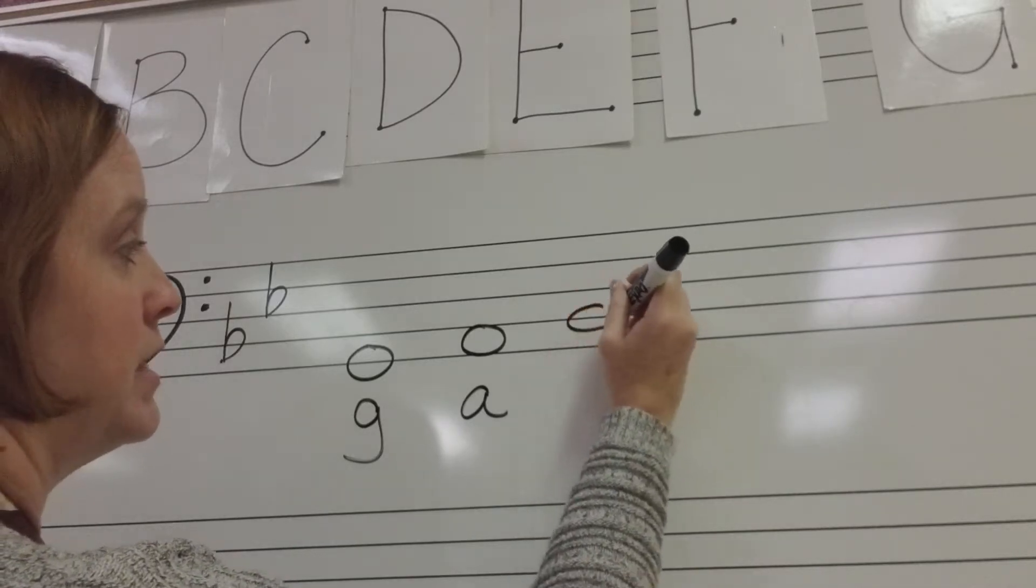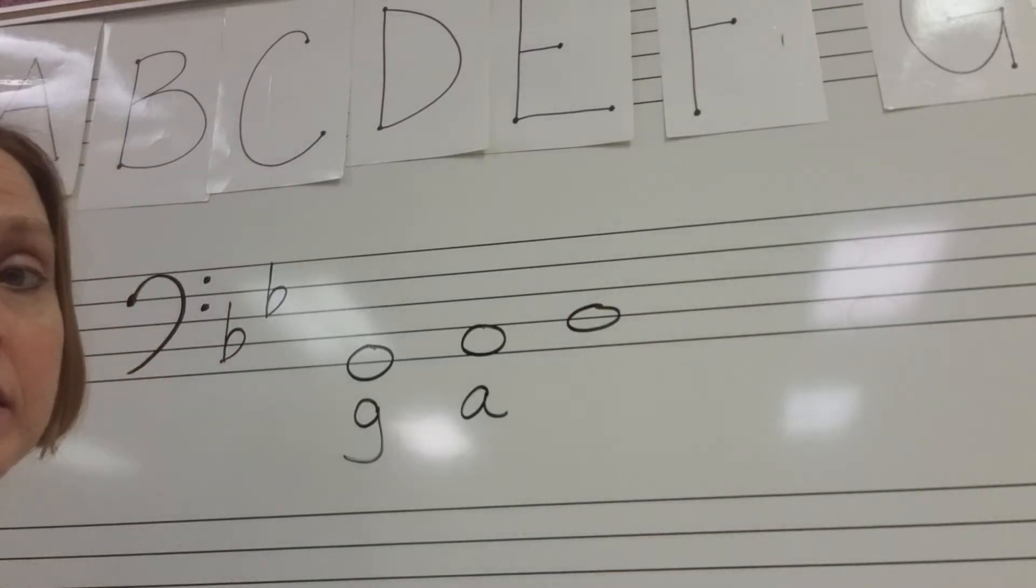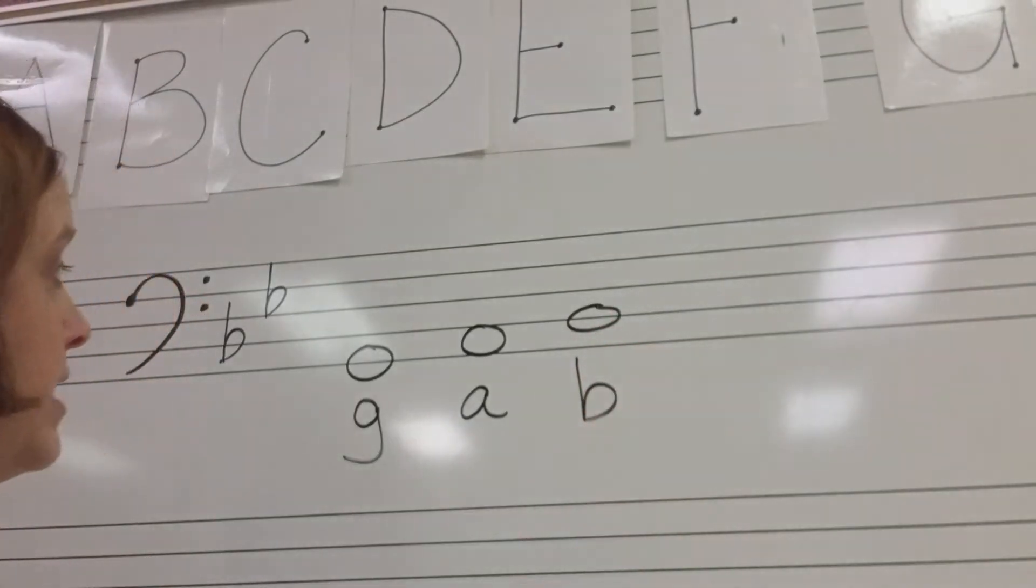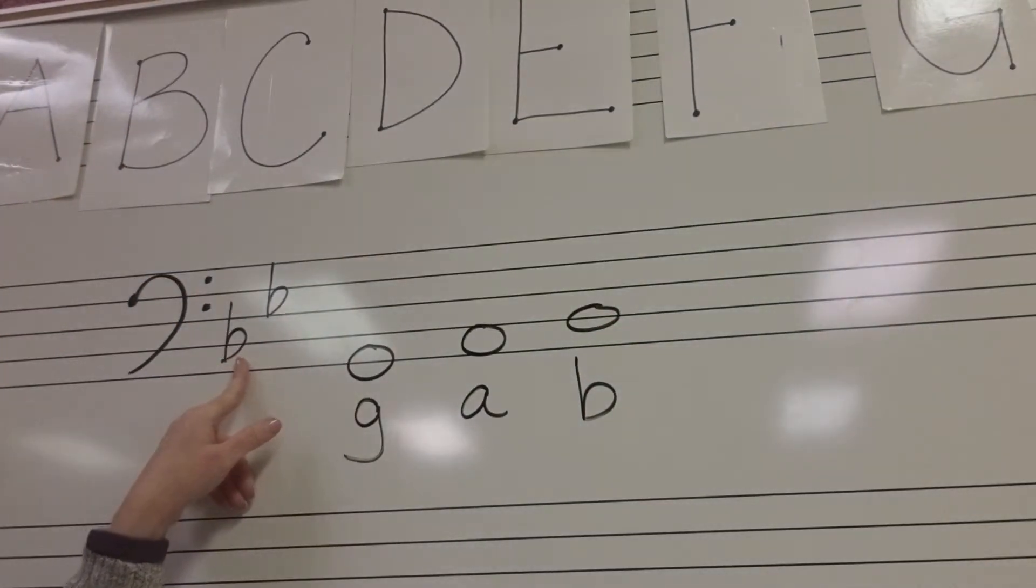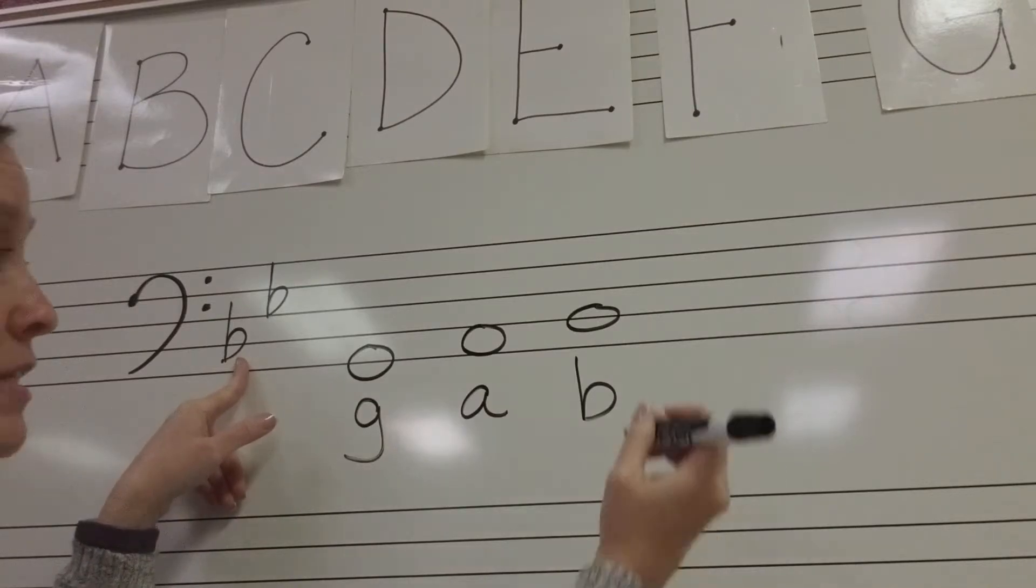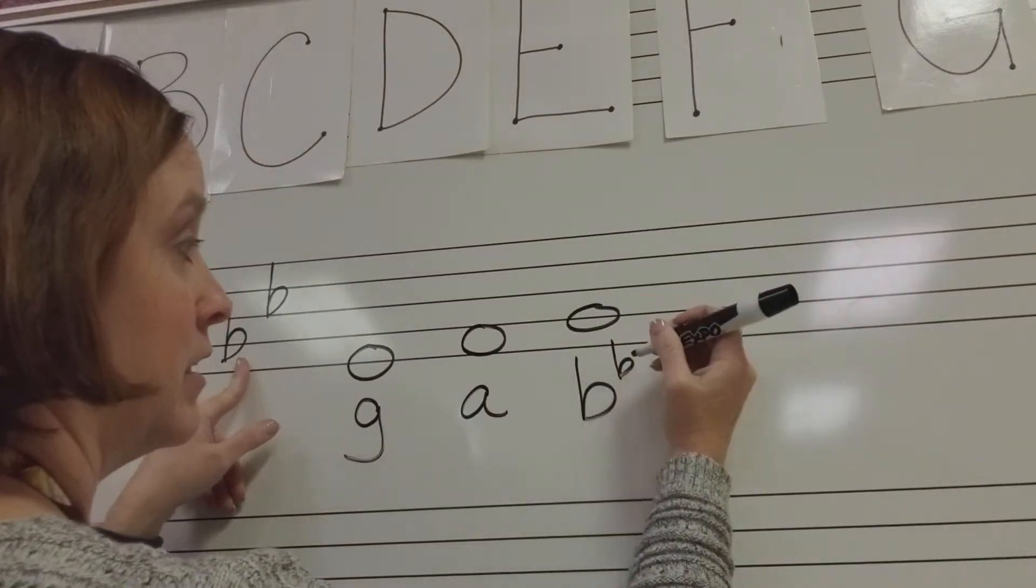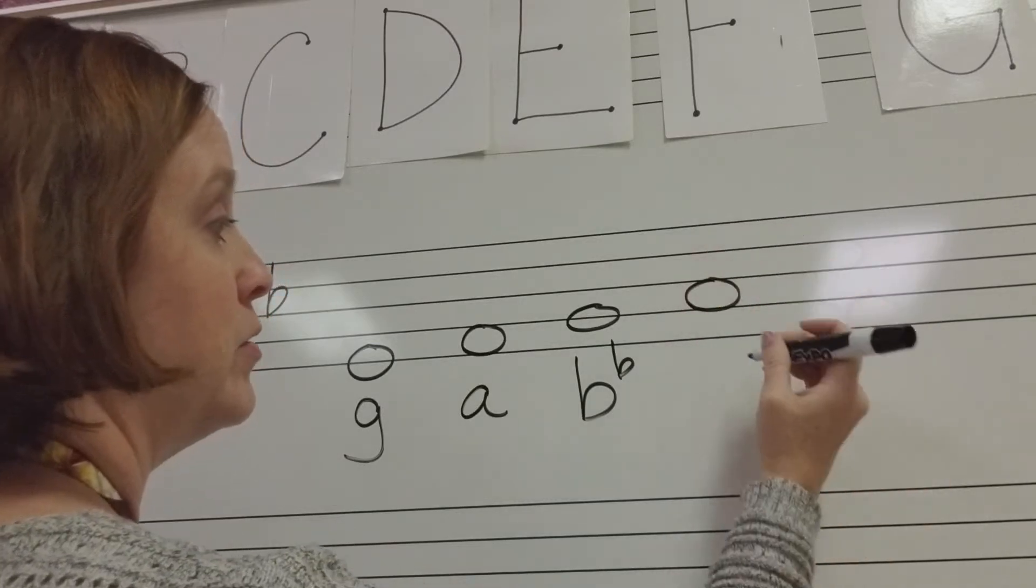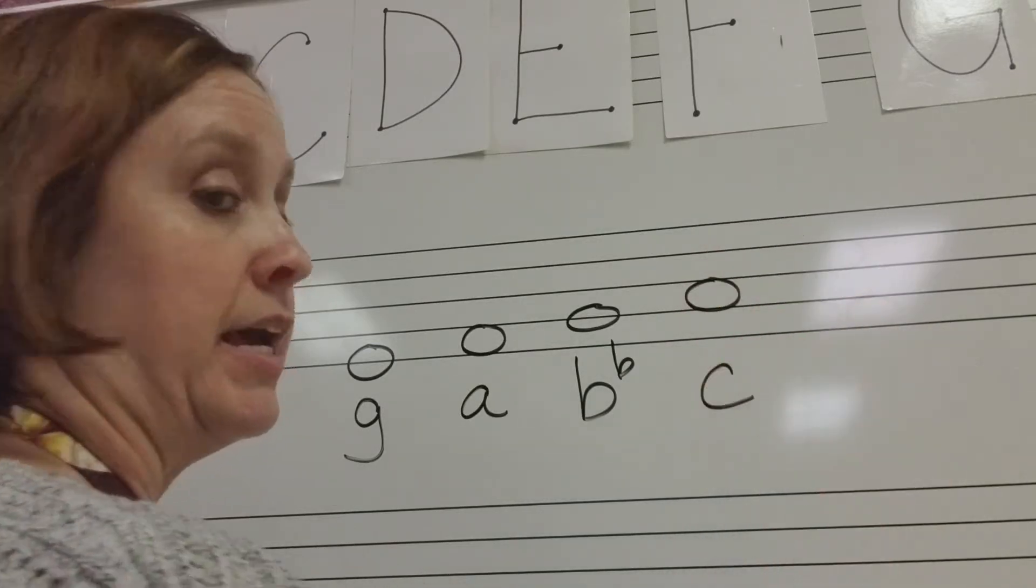Now don't skip any lines or spaces. We're going to draw our note on the second line. And I know that's a B. But I also know because of my key signature that this is a B flat.